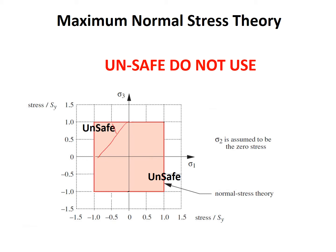The theory is unsafe in certain regions. In the positive sigma 1 and sigma 3 area, we have tension in both directions with less distortion, so we are safer. Similarly in the compression-compression regime. But in the second and fourth quadrants, where we have tension and compression simultaneously, our material becomes unsafe.